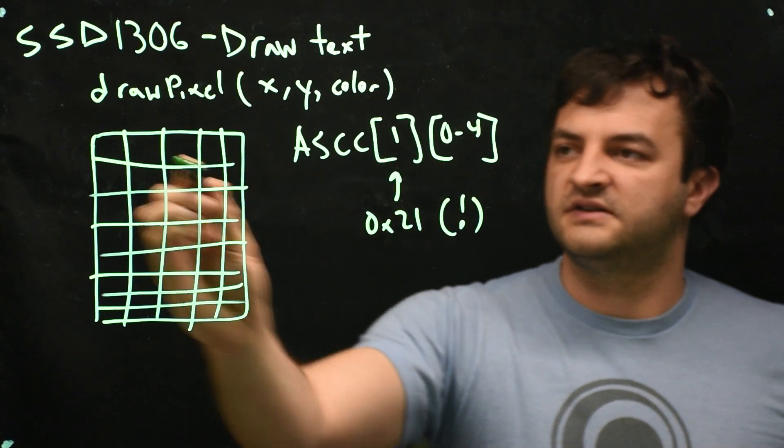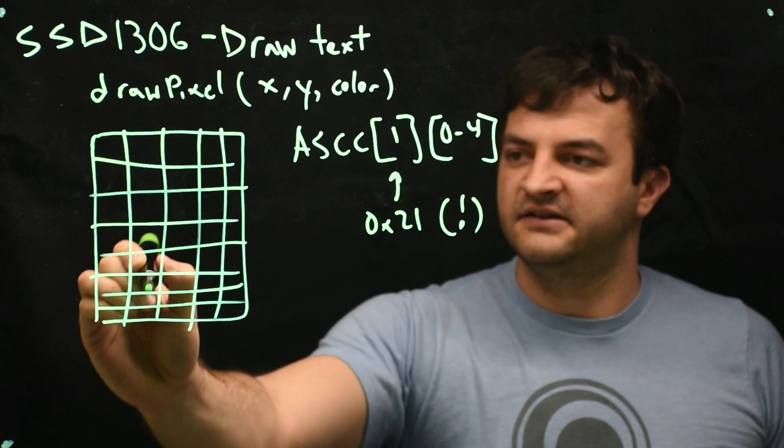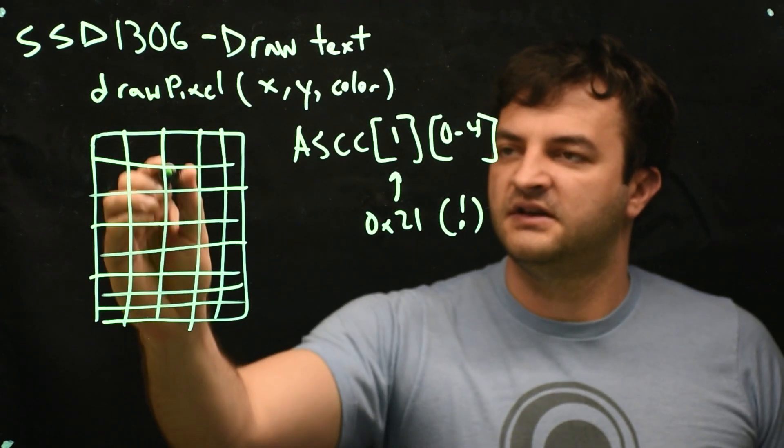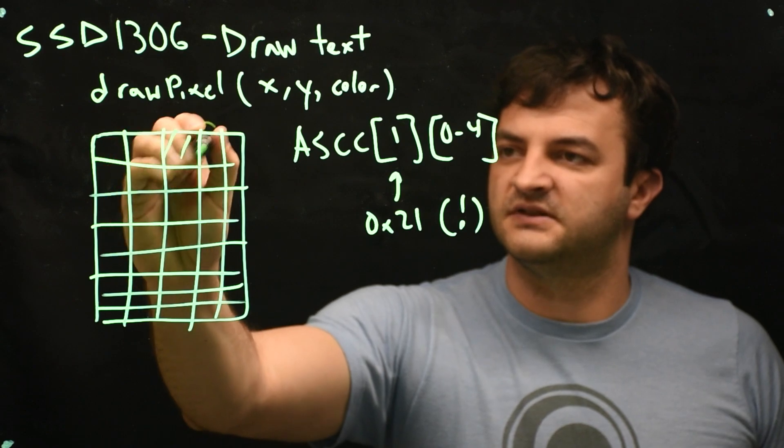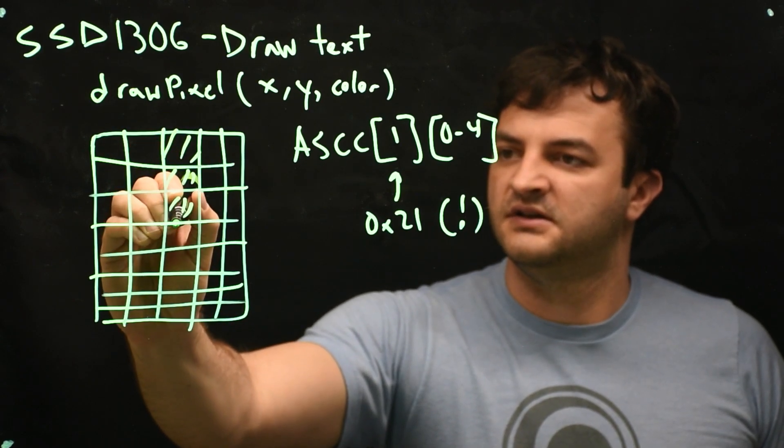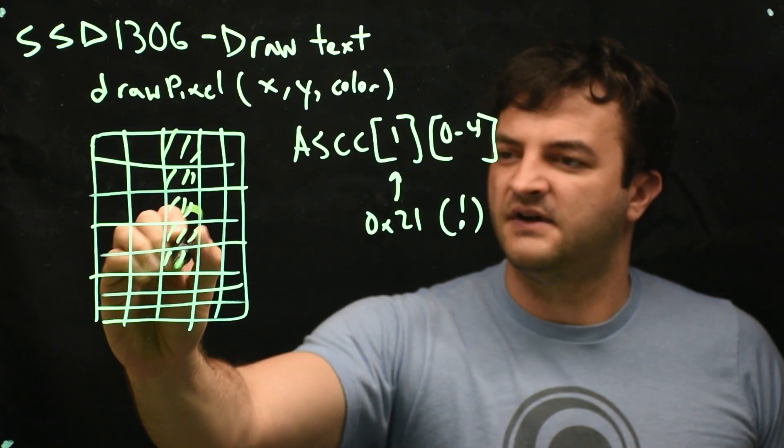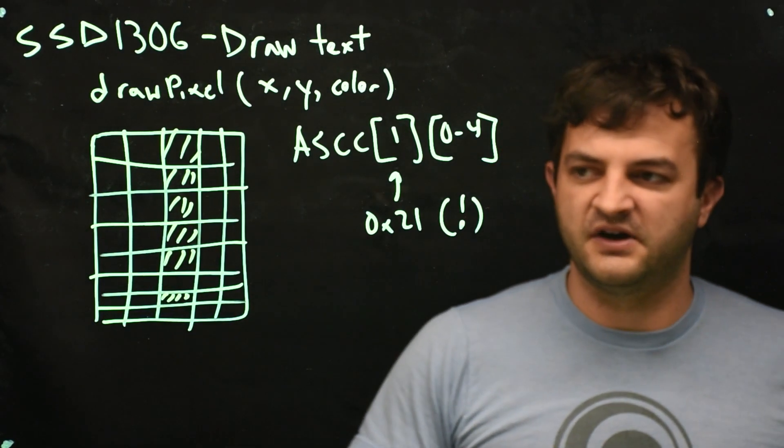So when we looked at these, the first two bytes were 0. The next one was 5F, which was 1, 2, 3, 4, 5, and off, and on. So those were the bits that were on, and then two more bytes of 0.